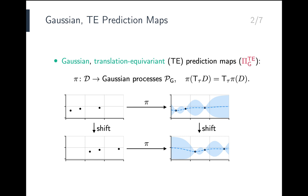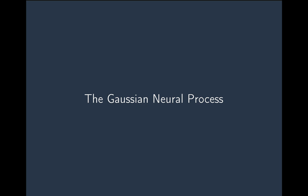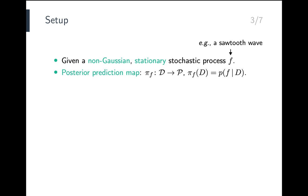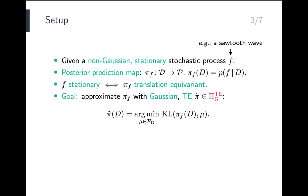We now turn our attention to the Gaussian neural process. Consider a potentially non-Gaussian stationary stochastic process F representing some ground truth — for example, F could be a sawtooth. From this ground truth, we can construct the posterior prediction map, which takes a dataset to the corresponding posterior predictive. Stationarity of F implies this map is translation equivariant. Today's goal is to best approximate this posterior prediction map with a tractable Gaussian prediction map, by finding the closest Gaussian process in terms of KL divergence — P to Q, between stochastic processes — for every dataset.